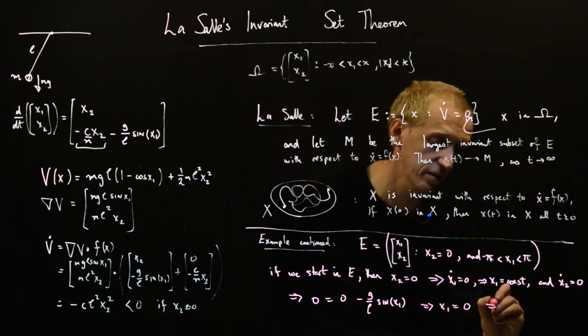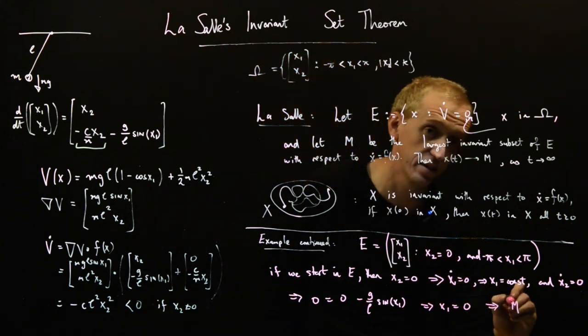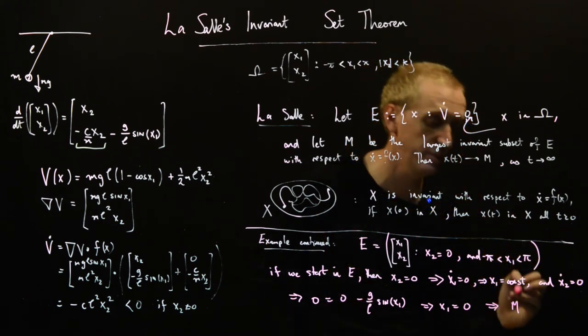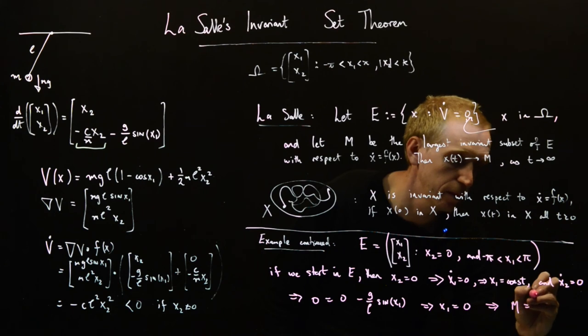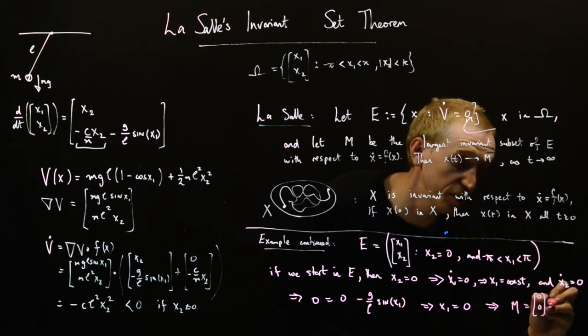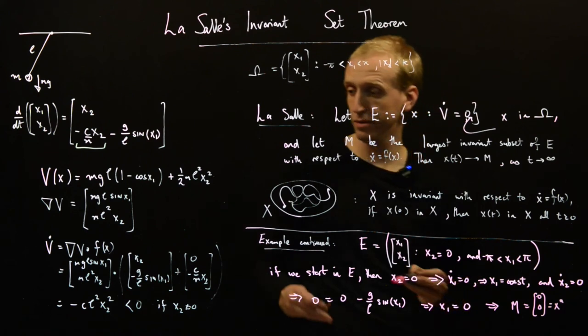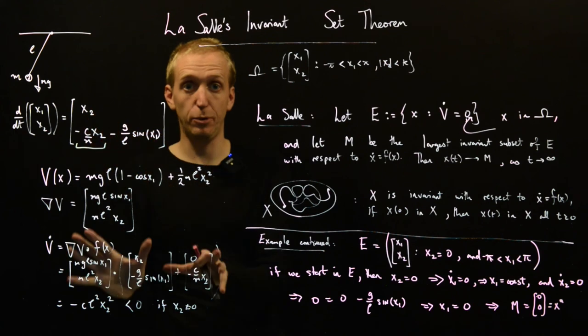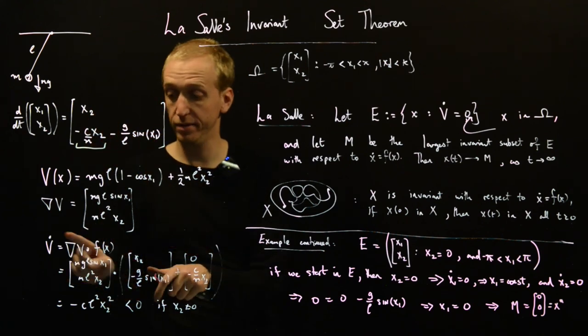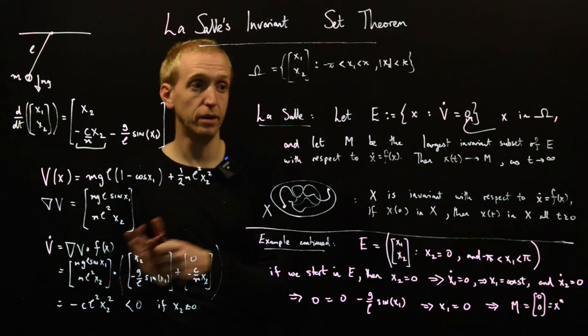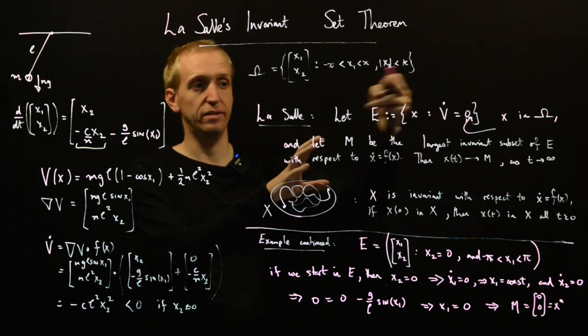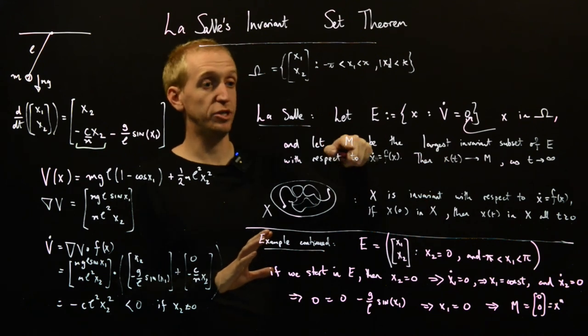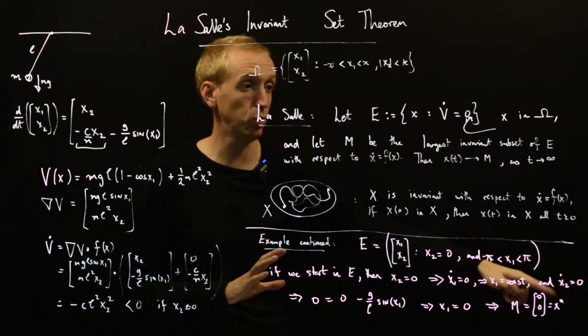So this implies that the set M, so the invariant set of E with respect to the dynamics of our system, is equal to (0,0), which is equal to our equilibrium point. So now we have everything we need. We have a Lyapunov function that proves that V dot is less than or equal to zero everywhere. And on our set where V dot is equal to zero, the largest invariant set M is equal to the equilibrium point.